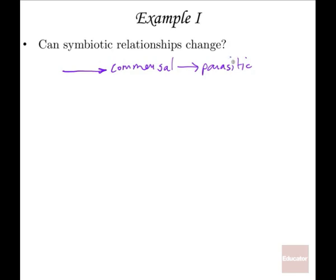Symbiotic relationships can actually change, and a really good example is in the bacterial realm, where we have this disease called Crohn's — spelled C-R-O-H-N-S — which is an intestinal autoimmune disease.